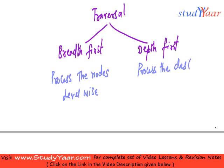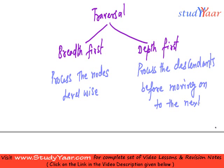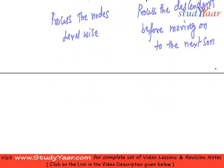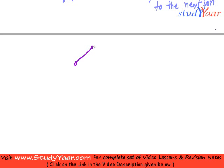In depth-first traversal, we process the descendants before moving on to the next sibling. Now let's look at breadth-first traversal. Suppose I have a tree like this — in this case my breadth-first traversal is going to work as follows.